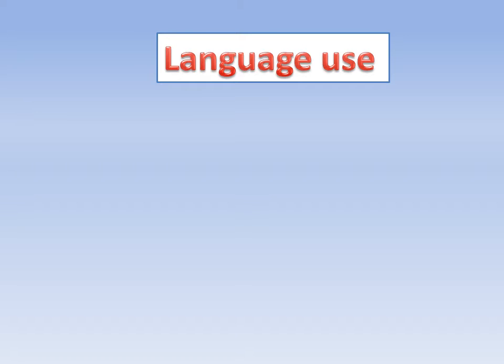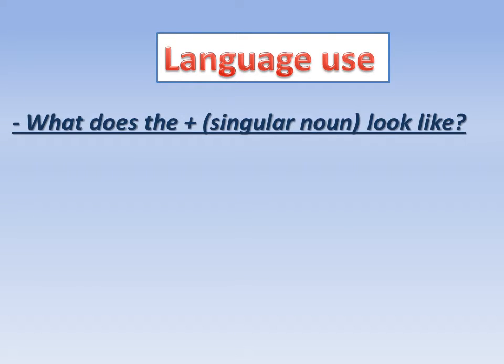Now, language use. Our grammar in this unit. How to ask about someone? What does that plus singular noun look like? Look like here means how does it appear, what does it look like? When I want to ask about someone's characteristics, I use what does that plus singular noun look like?